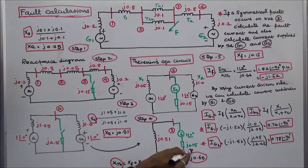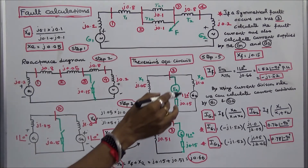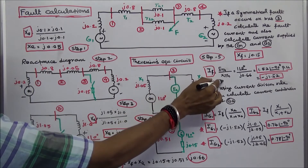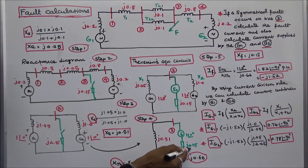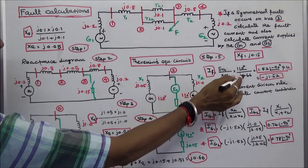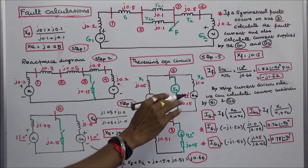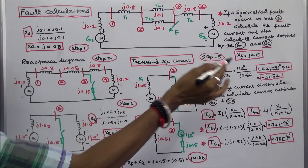The fault reactance is J0.15. Step 5: calculate the fault current IF. Fault current IF equals E-Thevenin divided by X-Thevenin. X-Thevenin equals the fault reactance plus the effective reactance: J0.15 plus J0.51, so X-Thevenin equals J0.66. E-Thevenin is 1 angle 0 degrees. Therefore, fault current IF equals 1.52 angle minus 90 degrees per unit, or minus J1.52 per unit.